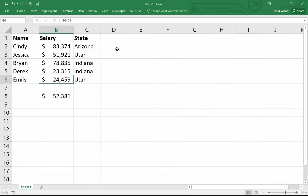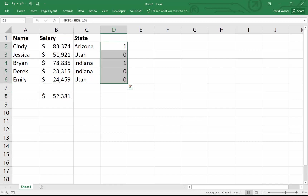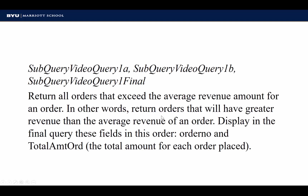So let's walk through how we would do this in Access. Here's the problem: return all orders that exceed the average revenue amount for an order — in other words, return orders that have greater revenue than the average revenue of an order. Display in the final query the order number and total amount ordered. Notice up at the top there are three different names — this is a clue. You're going to have to do three different queries.